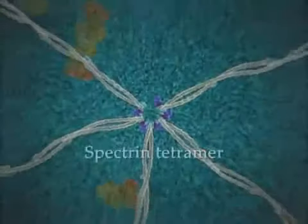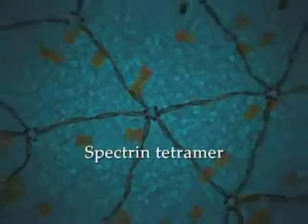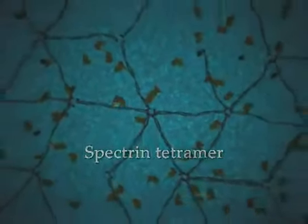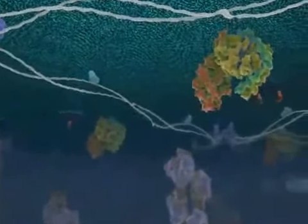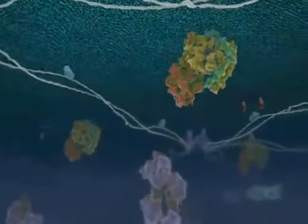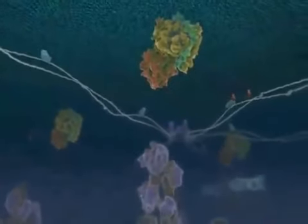Beneath the lipid bilayer, spectrin tetramers arranged into a hexagonal network are anchored by membrane proteins. This network forms the membrane skeleton that contributes to membrane stability and membrane protein distribution. The cytoskeleton is comprised of networks of filamentous proteins that are responsible for the spatial organization of cytosolic components. Inside microvilli,